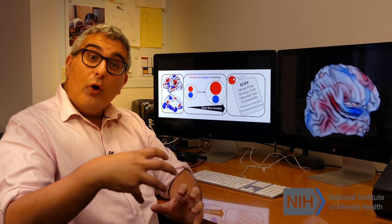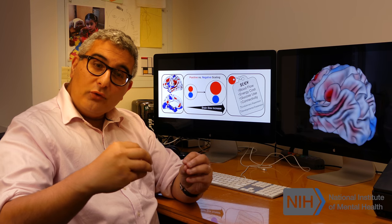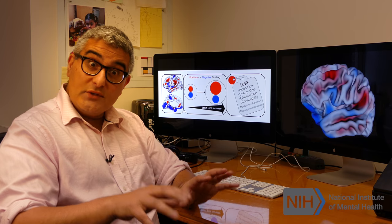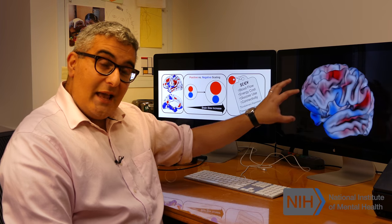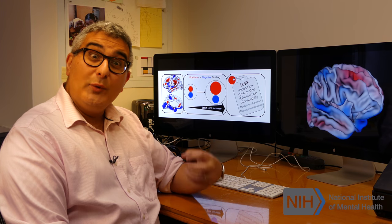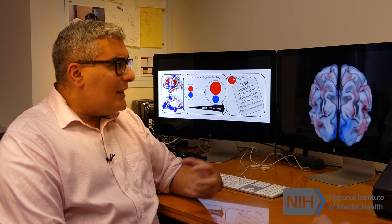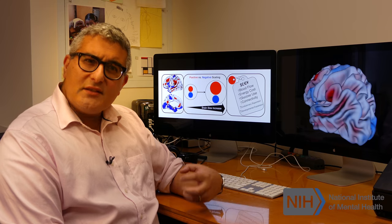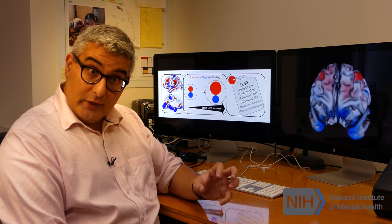So genes that were involved in the long processes of neurons that are important for connecting with other neurons are particularly highly expressed in these red regions. These red regions have high levels of expression of genes that have to do with mitochondria, that have to do with energy consumption and generation. So a hint that these regions might be potentially expensive or requiring more energy than the blue regions.